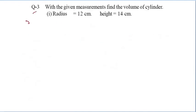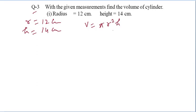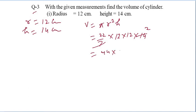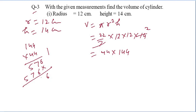Question 3, part (a): r = 12 cm, h = 14 cm. Volume = 22/7 × 12 × 12 × 14. Cancel 7 with 14, giving 22 × 144 × 2 = 22 × 144 = 3168... simplifying: 6336 cm³. That is your answer.